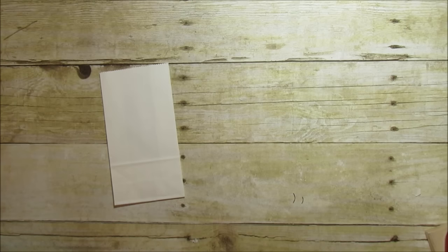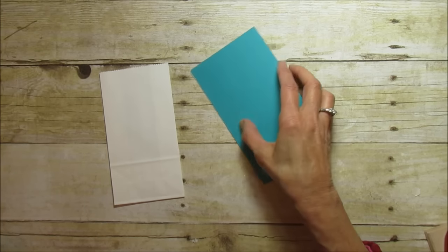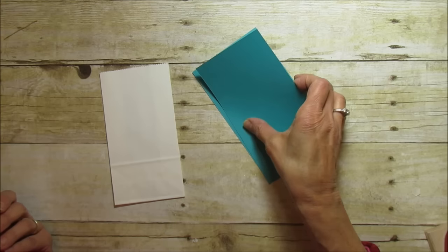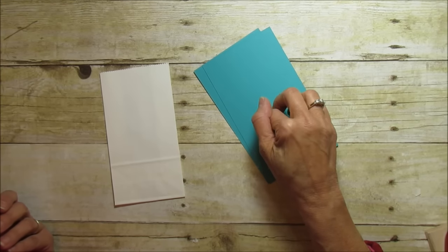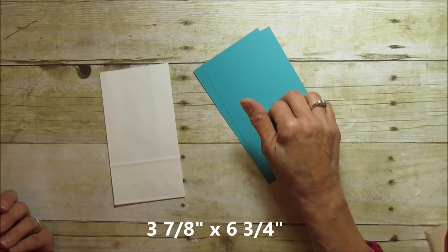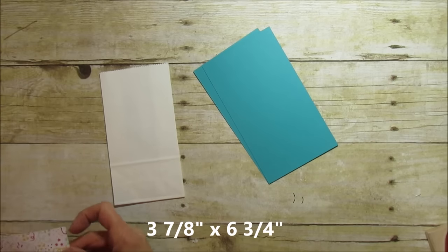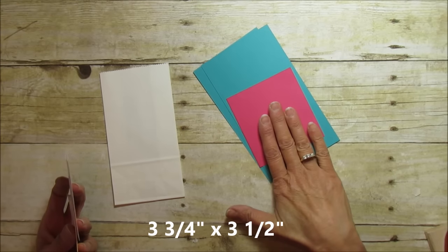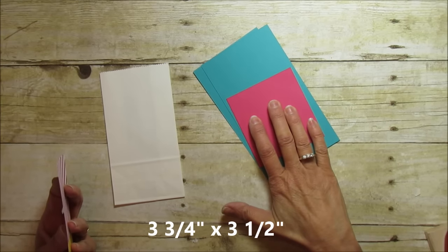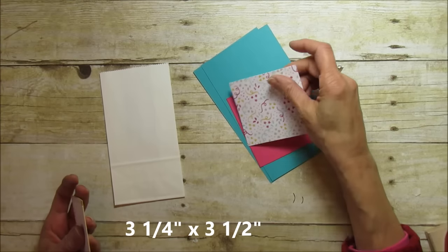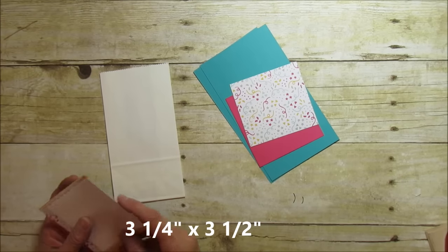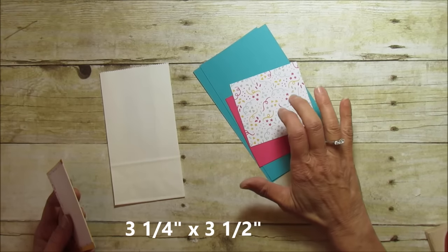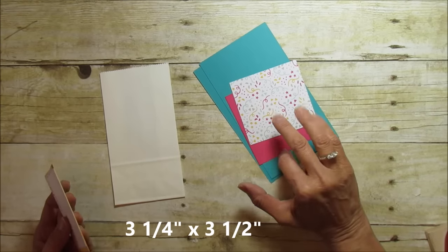You're going to need two pieces, this is Bermuda Bay that I'm using. You're going to need it at 3 7/8 by 6 3/4 and then you're going to need some matting pieces. The bottom mat is 3 3/4 by 3 1/2 and the top mat is 3 1/2 by 3 1/4. I just use regular cardstock for this because this is what we're stamping our sentiment on.